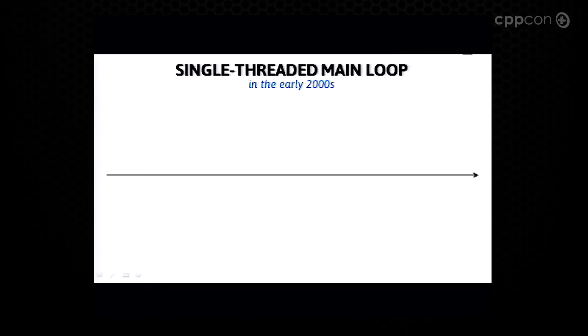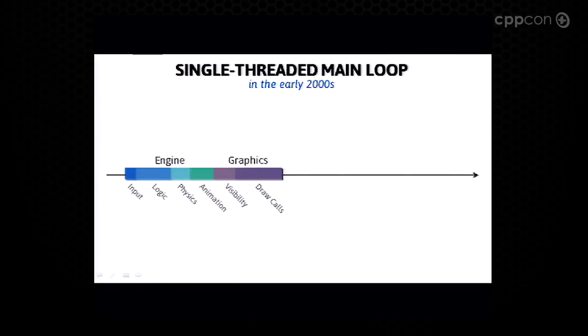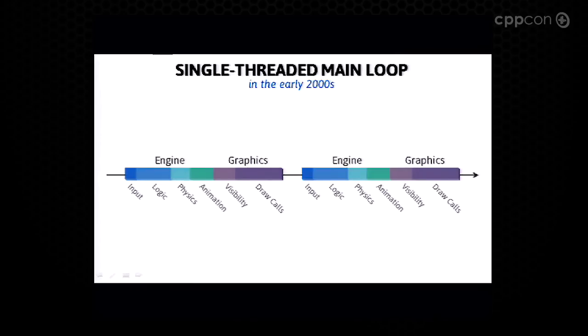In the early days, a single-threaded main loop of a game would look like this. First you would do a bunch of work we call the engine tasks: gathering player input, updating logic, physics, and animation. Then we'd perform the graphics tasks: determining what's visible to the player, issuing draw calls to the GPU, and repeat. This sequential approach became a dead end on multi-core — why limit ourselves to one core and leave the others unused?